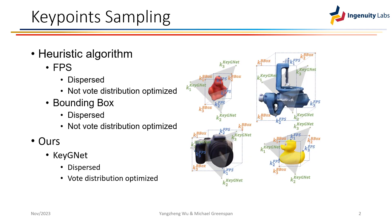For keypoint voting-based 6D pose estimation methods, keypoints are typically sampled using two main approaches: FPS and bounding boxes. Both algorithms ensure that the sampled keypoints are sufficiently spaced apart, enhancing the performance of front-end least-squares-fitting algorithms like PnP. However, these algorithms have not considered the training of the backbone network. Our proposed Key-GNet addresses this oversight by optimizing the keypoint locations, allowing the associated modes to be better learned by the backbone network.